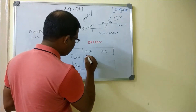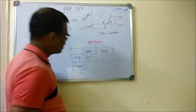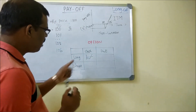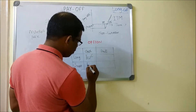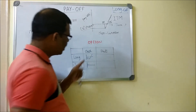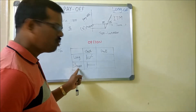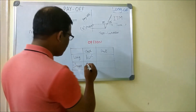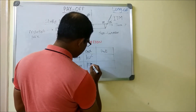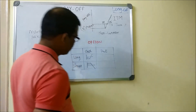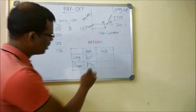If I draw the payoff profile for the long call, the graph slopes upward after the break-even point with a flat loss region below. For the short call, whatever money the long call buyer gains is exactly what the short call seller loses — so the short call diagram is the mirror opposite of the long call. Together they look like a funnel shape.